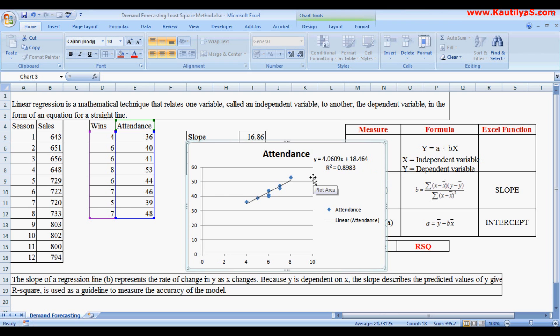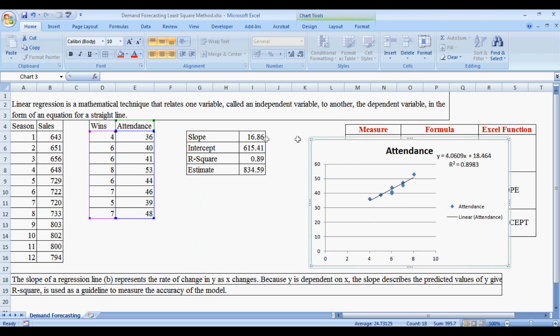These are the two ways to calculate demand forecasting in Excel. One is by using Excel functions—SLOPE, INTERCEPT, and R-square value—to calculate the estimate. Another is by inserting a graph, adding a trendline to it, and from the trendline we can calculate the R-square equation.